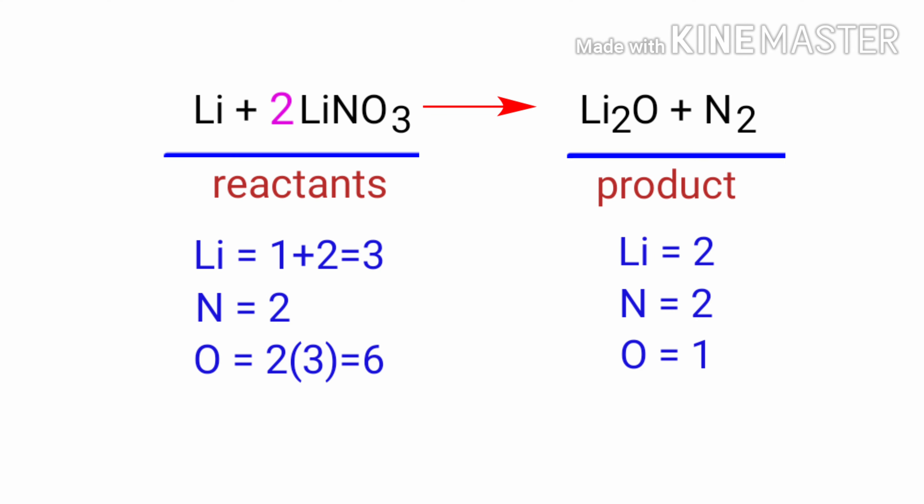Now we need to balance the Oxygen atoms. To do this, we need to put a coefficient of 6 in front of Li₂O. The Oxygen atoms are balanced.